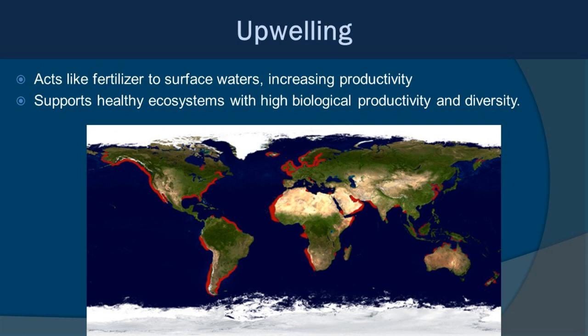This map shows all of the high-productivity areas around the world, and they coincide with areas of upwelling. As plankton and pretty much anything else alive die or shed fecal matter, it drops to the bottom and becomes part of the deep sea, where those nutrients get trapped. So anytime we have upwelling, it acts like fertilizer to surface waters, increasing productivity, and with higher productivity, you have a more diverse and healthy ecosystem.